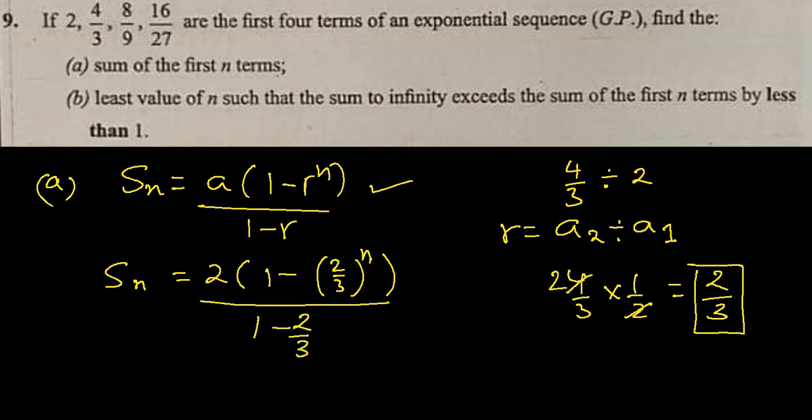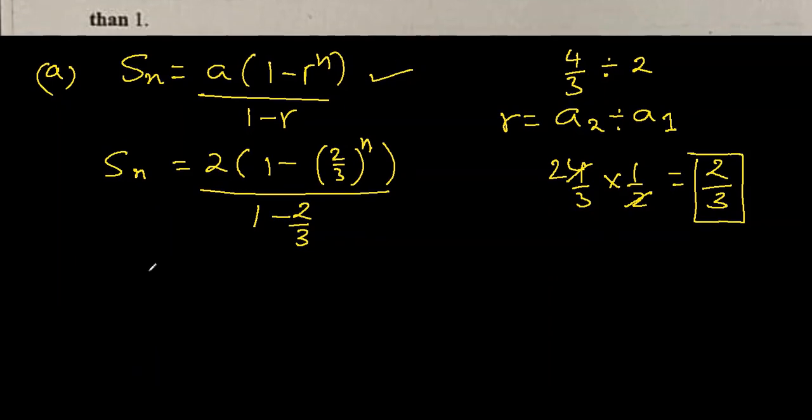1 minus 2/3 will be 1/3, and when we write 1/3, the denominator becomes a numerator here, so it becomes 6(1-(2/3)^n).